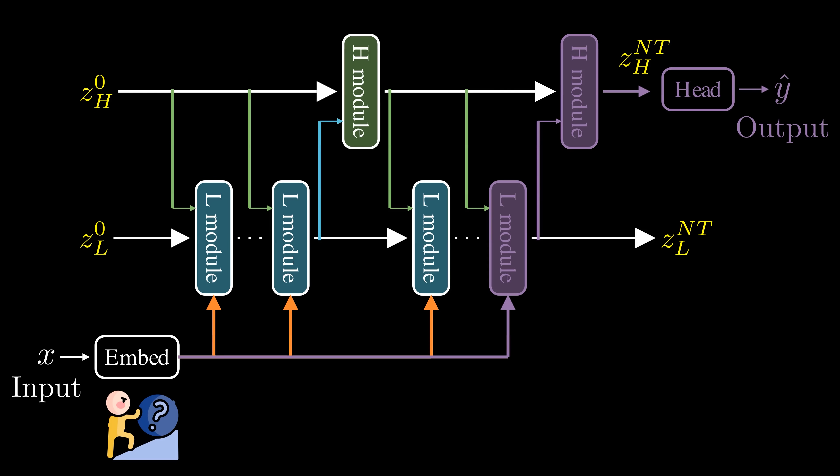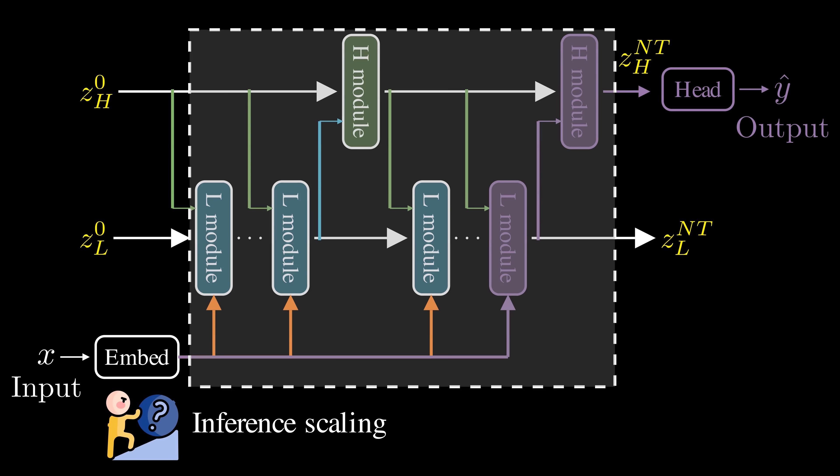To further boost the effective model depth, we can scale inference compute by performing multiple forward passes of the HRM model. Each pass is called a segment.